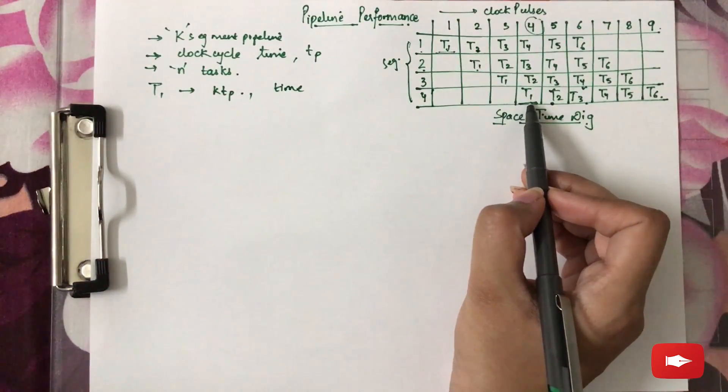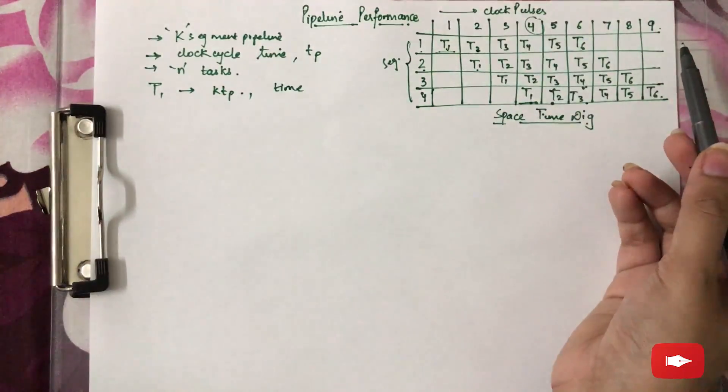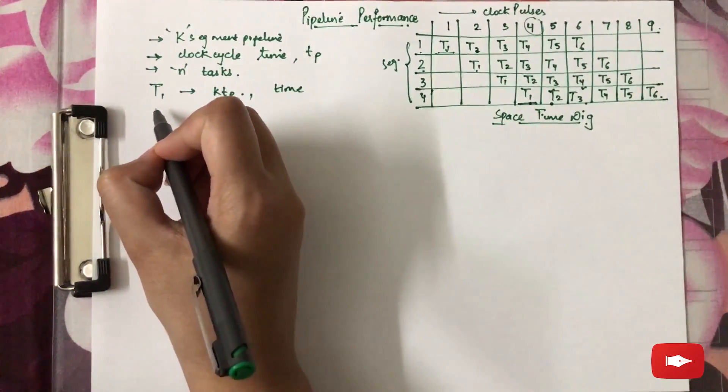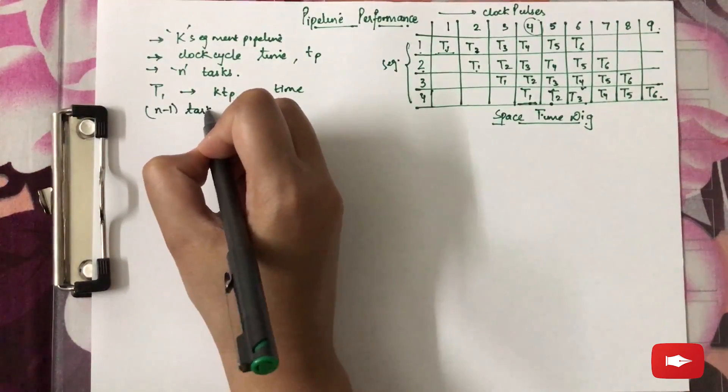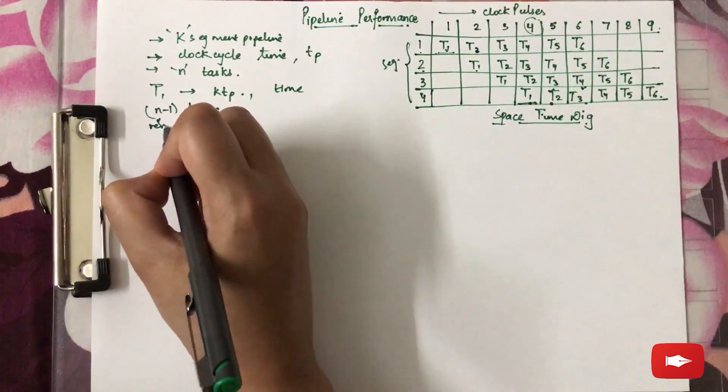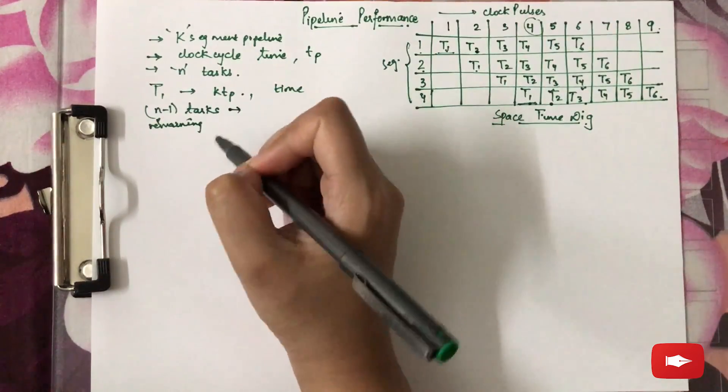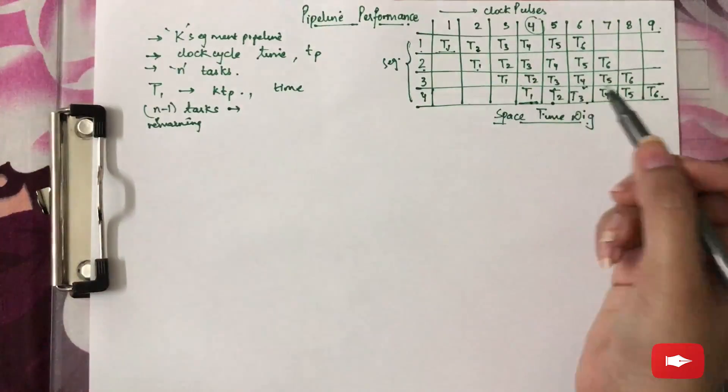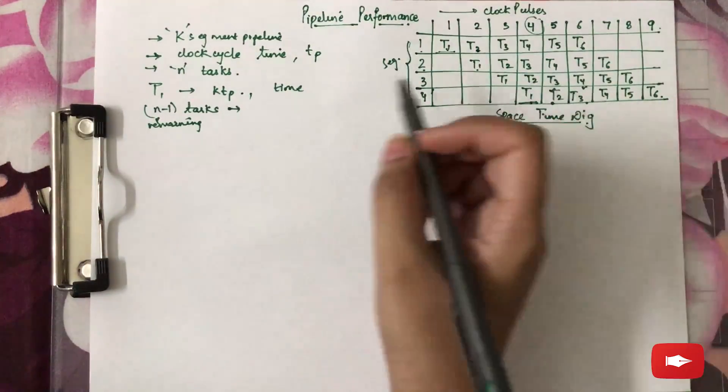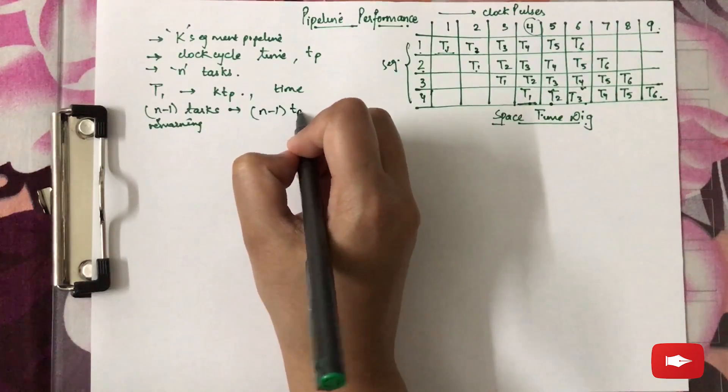Here the number of segments was 4, and therefore the time required was 4 clock pulses. The remaining tasks, that is N minus 1 tasks, will be completed at a rate of 1 task per clock cycle after completion of the first task. Therefore, it will be (N-1)TP.